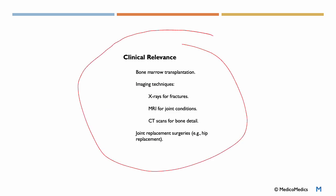Now, clinical relevance. Bone marrow is important for transplantation. In imaging techniques, we use x-rays for fractures, MRI for joint conditions, and CT scans for bone detail. Another thing is joint replacement surgeries, like hip replacements.